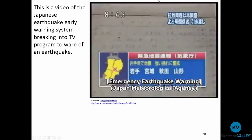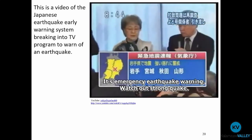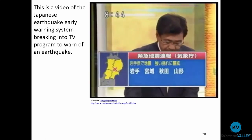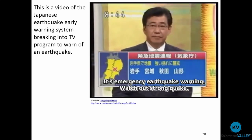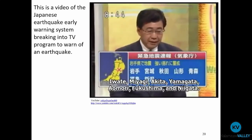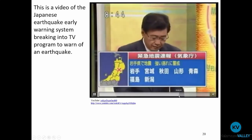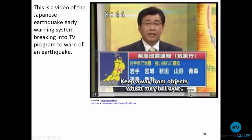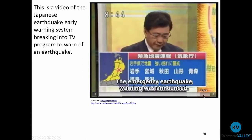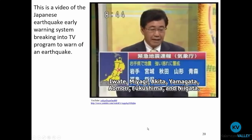This is what the Japan early warning system looks like — it bounces onto the TV, much like tornado warnings. It shows a figure of where the activity is, displays 'Emergency Earthquake Warning,' tells people to watch out for the affected area, get under desks and other objects, protect themselves, keep away from objects that may fall over, and indicates what areas are at risk.